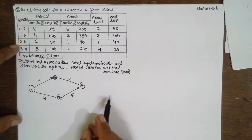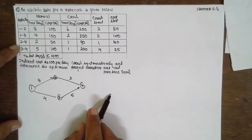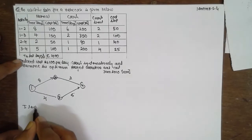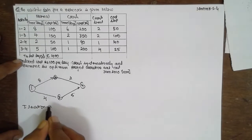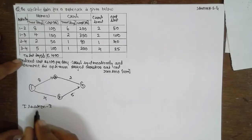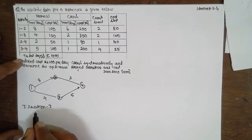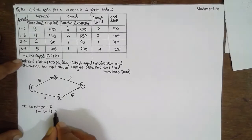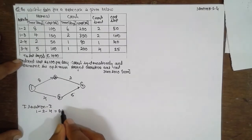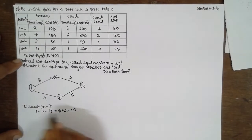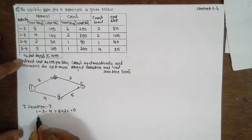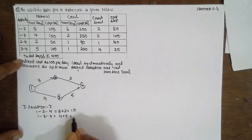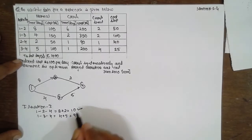Now we are going to find out the critical path. I will consider iteration 1. Path 1-2-4: duration is 8 plus 2 equals 10. Path 1-3-4: duration is 4 plus 5 equals 9. The critical path is 1-2-4 with duration 10.